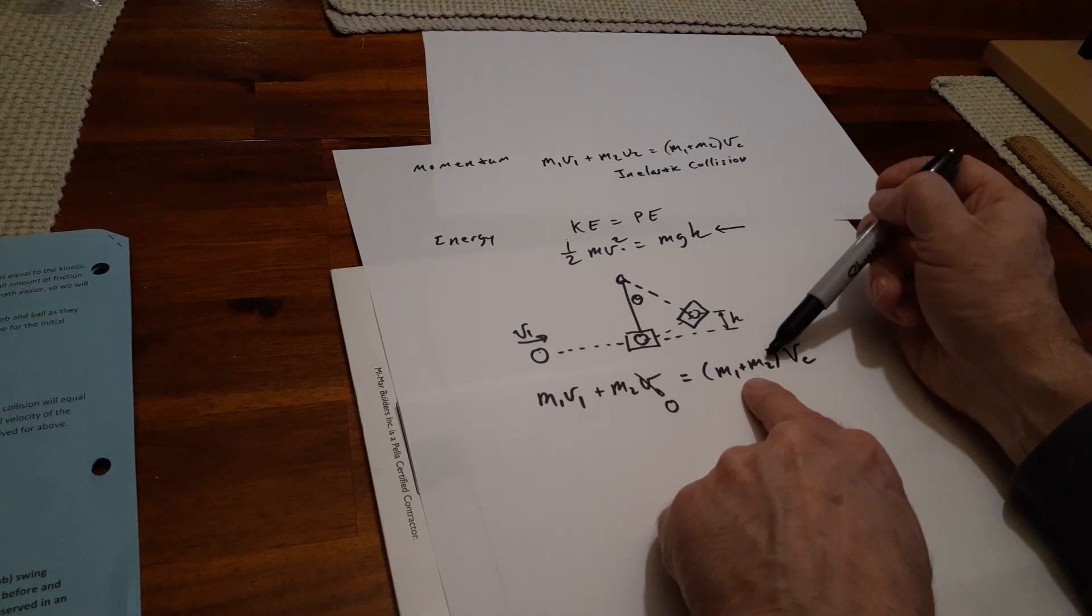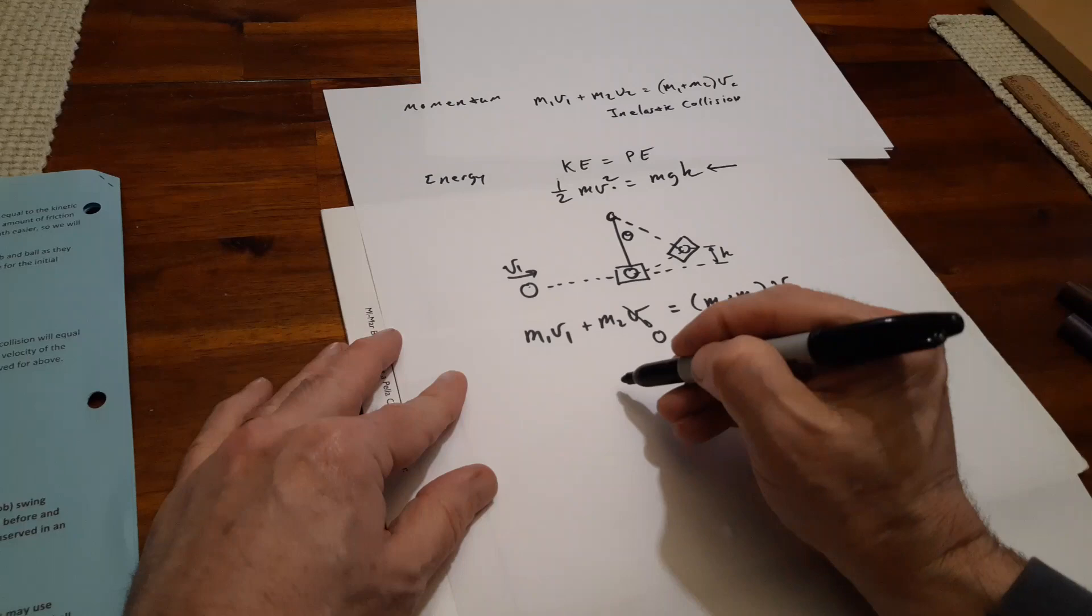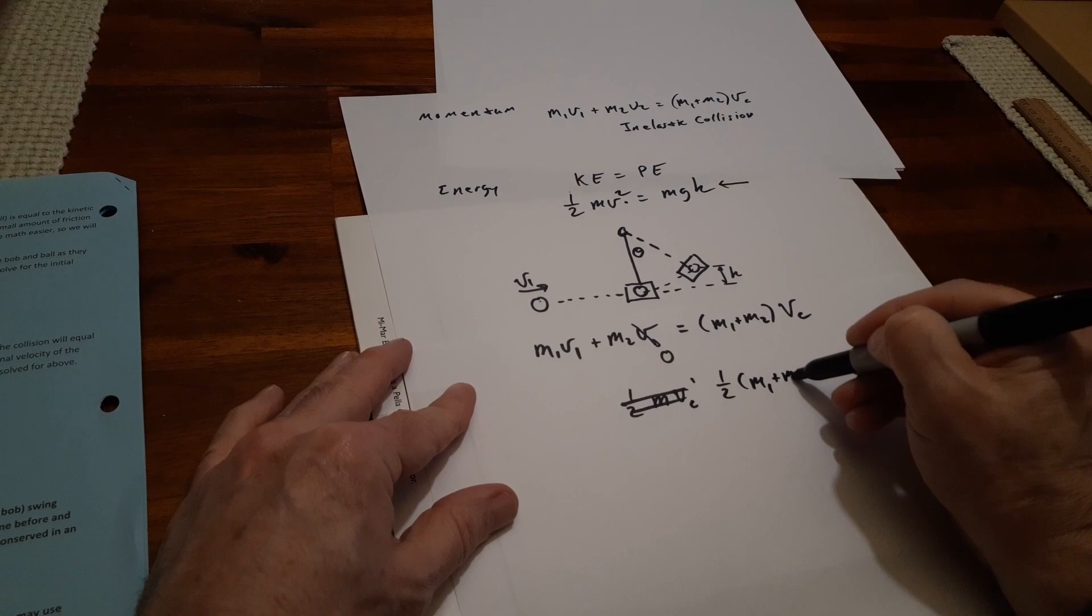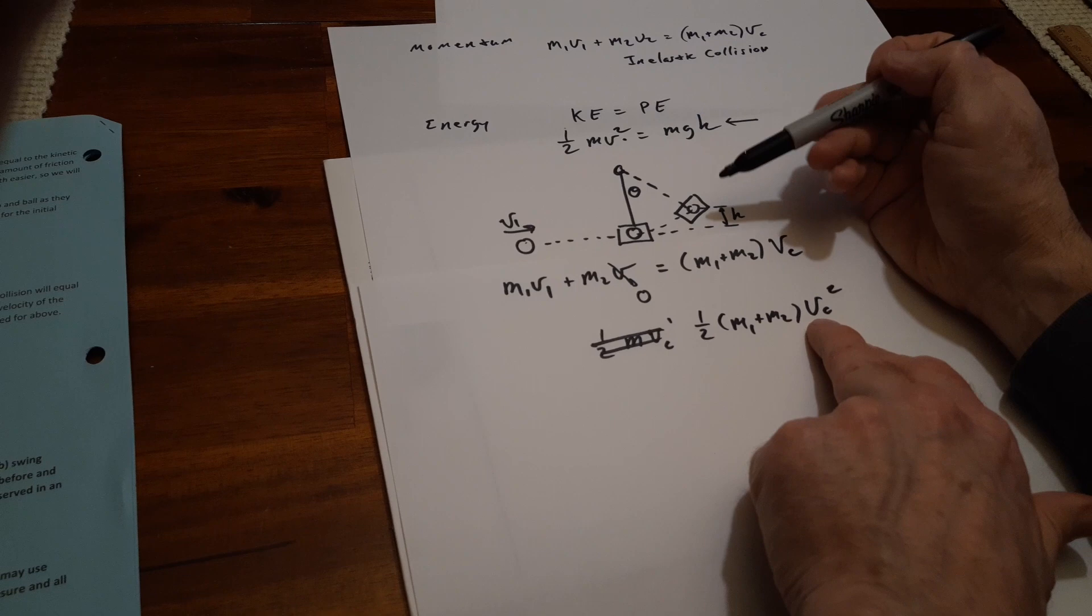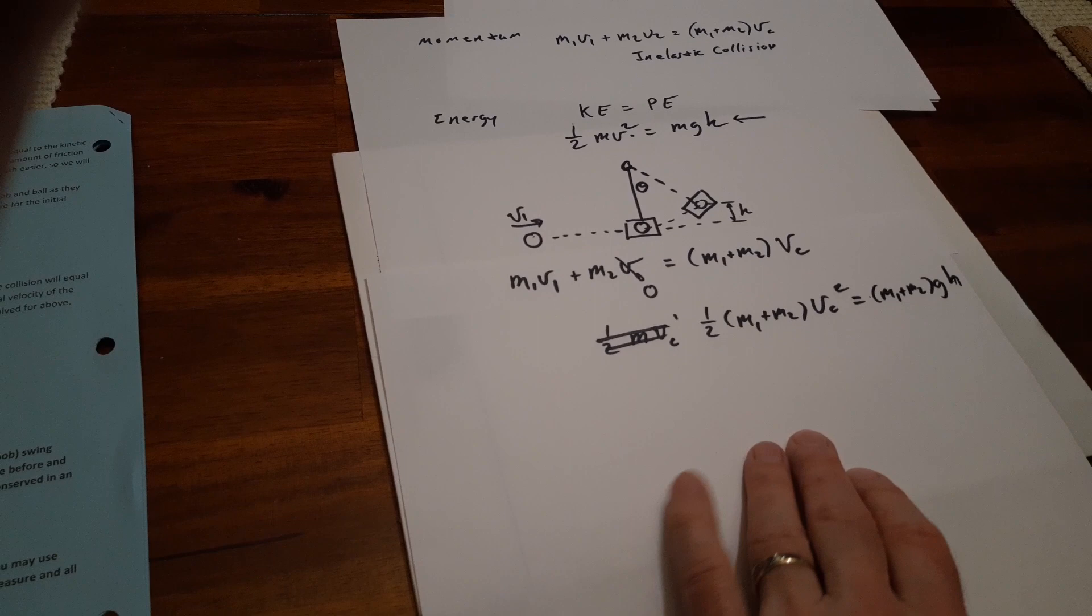Okay, now this guy carries over into my energy equation: one-half combined mass, velocity combined, and now reaches a final height of combined mass with gravity and the height, which gives us its potential energy. These are the two equations we have.